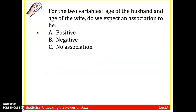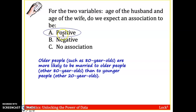What about the age of the husband and the age of the wife? Generally we'd expect this to be a positive correlation — older people in their 60s or 70s are more likely to be married to other older people than to younger people. Of course there are always exceptions, but the general trend is a positive correlation.